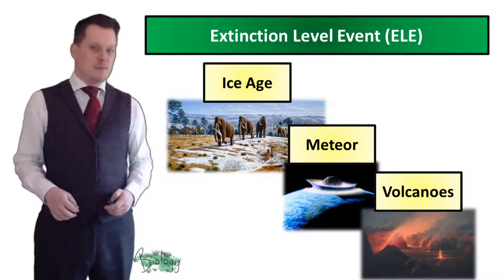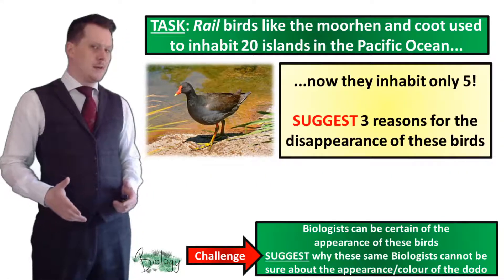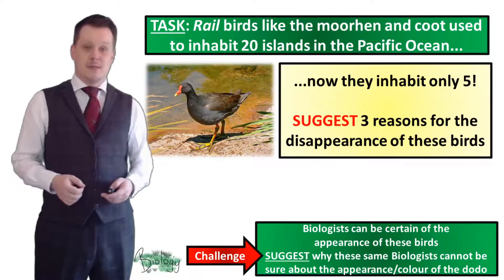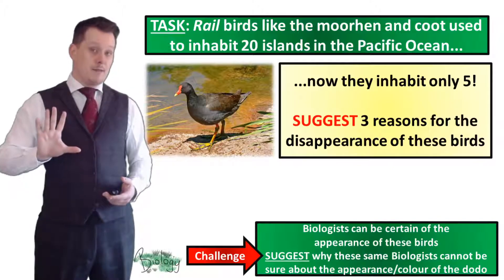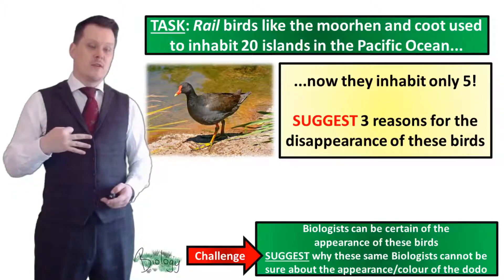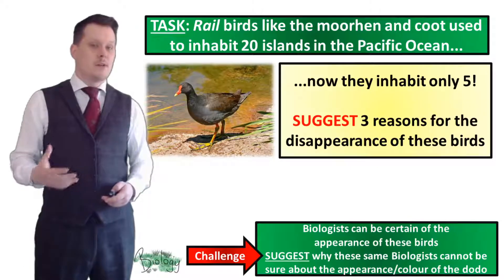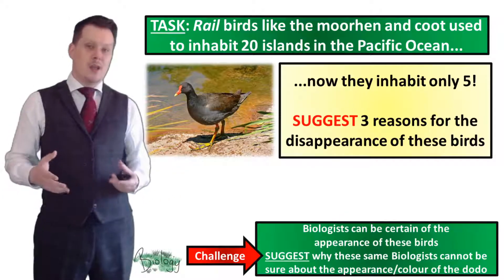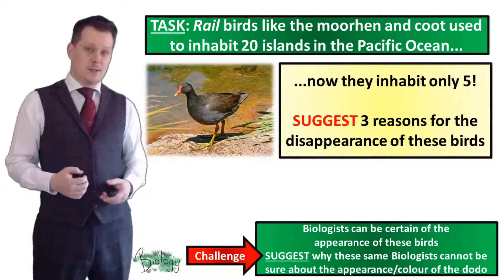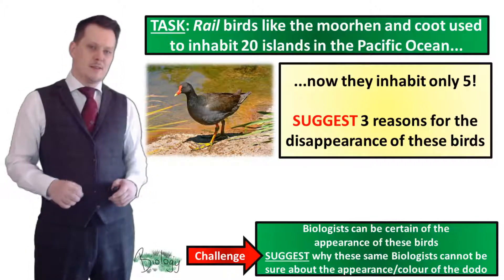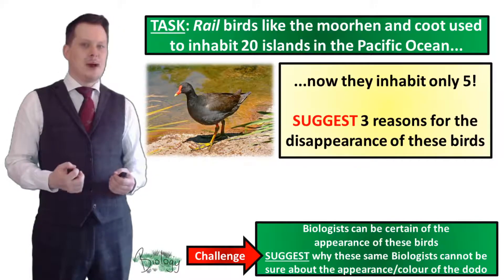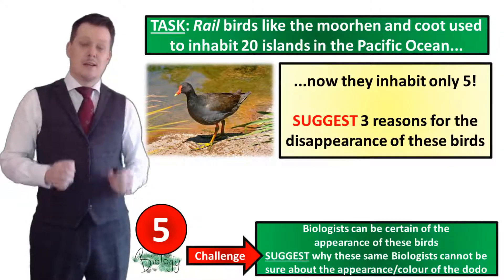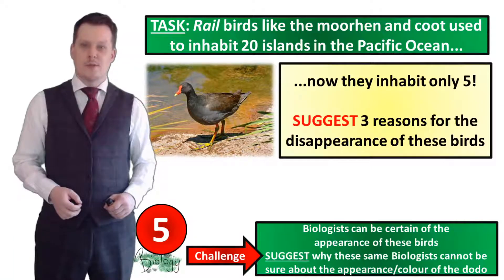With all these reasons for extinction in mind, rail birds like the moorhen and the coot used to inhabit 20 islands in the Pacific Ocean but now they only inhabit five. Suggest three reasons for the disappearance of these birds from the other islands. For a challenge, consider why biologists cannot be certain about the appearance or colour of the dodo. Pause the video if you need more time.